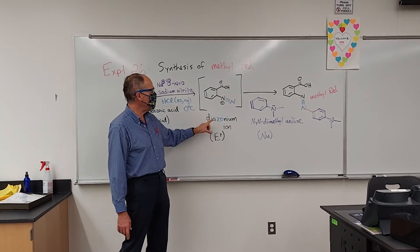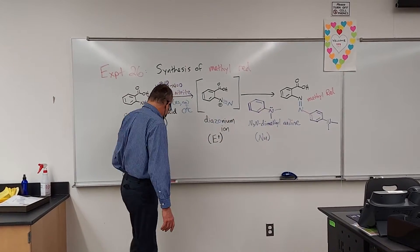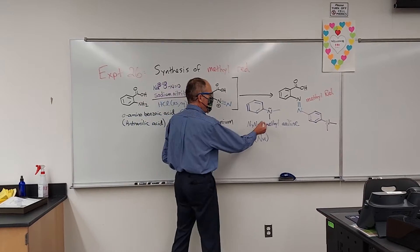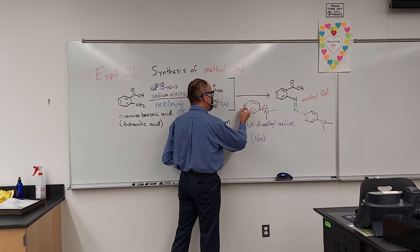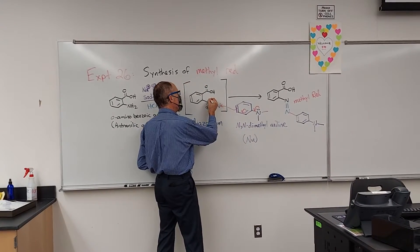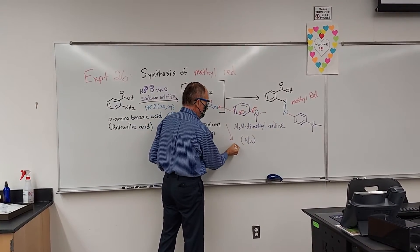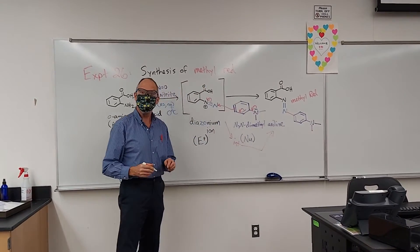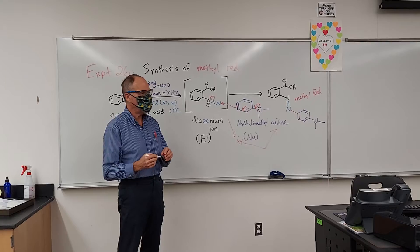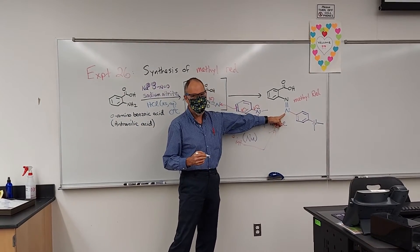Diazonium ion is now going to accept a pair of electrons from this nucleophile, which will attack in this fashion to make an intermediate.